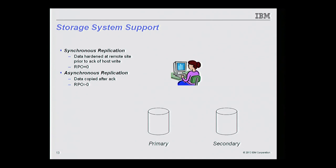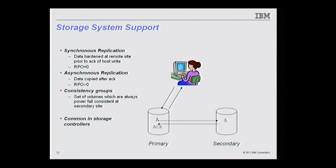In asynchronous replication, data is copied after the ACK — not as part of the actual write — guaranteeing the RPO will be greater than zero, meaning there will be data loss when a disaster occurs. With asynchronous replication, the host writes, the primary storage gives back an acknowledgment, and at some later point data is replicated to the secondary. Another concept most storage subsystems have is consistency groups — a set of volumes whose replicas are maintained in a power-fail-consistent state at the remote site, essential for asynchronous replication corner cases.